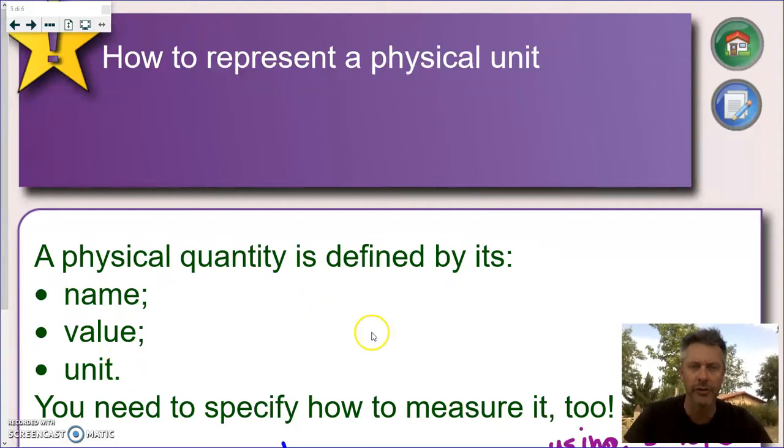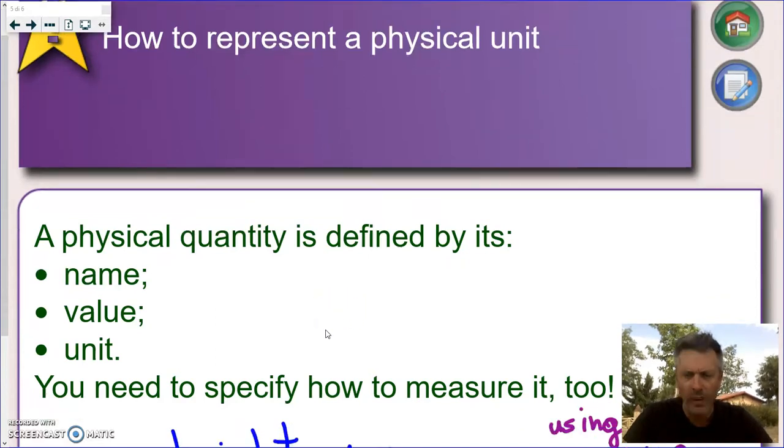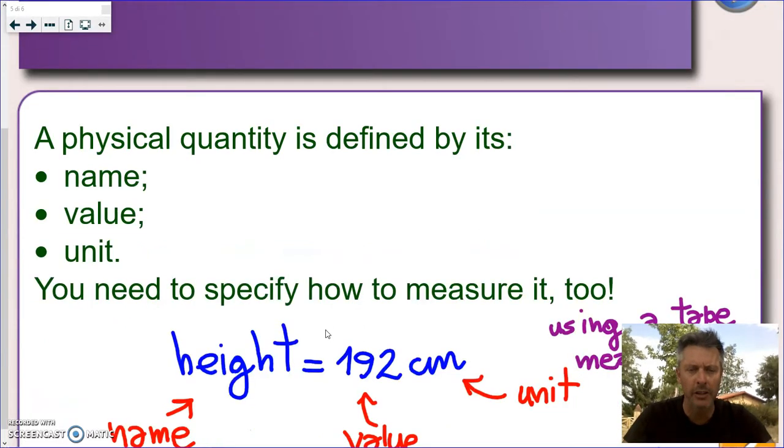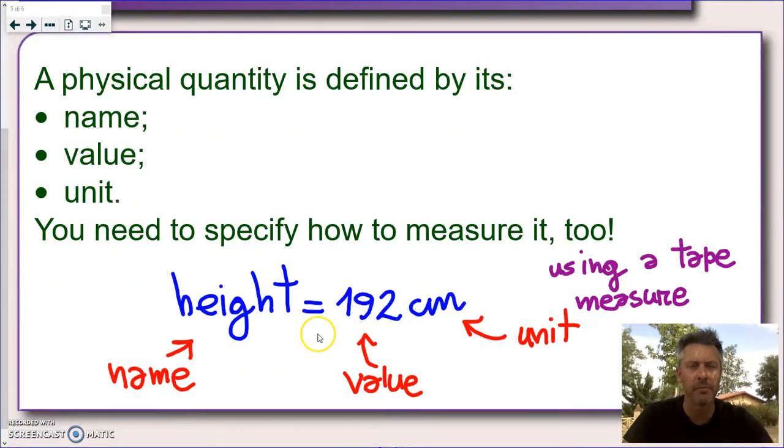Of course, when we go into the definition of a physical quantity, like length or mass, we also must be able to tell some ways to measure that. Just to get the height, at least right now, is 192 centimeters. So as you can see, I wrote here the name of a unit, and the unit, and I'll come out with this number. For instance, I could have used a measuring tool, like a tape measure.